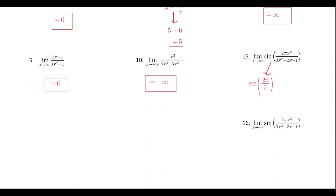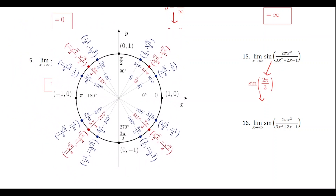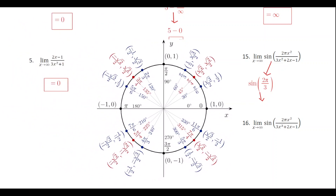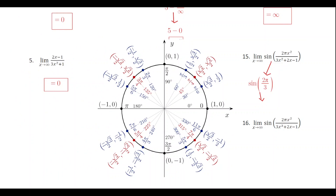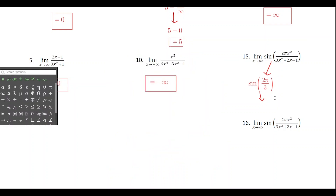Since the expression inside the parentheses approaches 2π over 3, we just evaluate sine of 2π over 3 using the unit circle. At 2π over 3, the y-value — which is how we evaluate the sine function — is root 3 over 2. So the value of this limit as x approaches infinity is root 3 over 2.